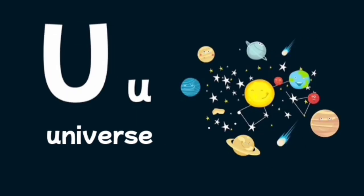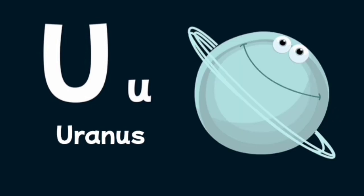U is for universe, all matter, energy, and space, also called the cosmos. U is for Uranus, the only planet in our solar system that spins on its side.